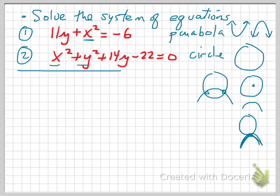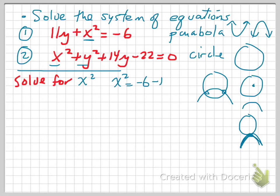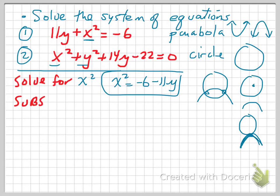How are we going to solve it algebraically? We're trying to find the point where the x and y values are common to both equations. We're going to solve for one of the variables in one of the equations. The simpler equation is equation number one, so I'm going to solve for x squared from equation one and we'll end up with x squared is equal to minus 6 minus 11y. I'm going to box that in, because I'm going to substitute that value for x squared into equation number two.